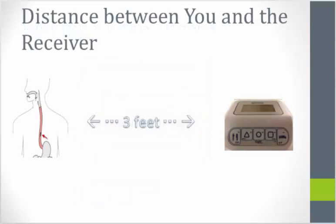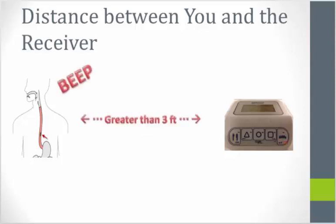It's important to keep the receiver within three feet of yourself during the test. Any prolonged distance from the receiver will cause the receiver to continually beep. A blue flashing light demonstrates that the capsule is connected wirelessly to the receiver. A red flashing light means it's out of range, not connected, and not recording. If this happens, simply place the receiver close to your chest until the sound stops and the light changes from red to blue.